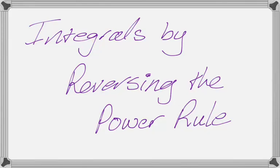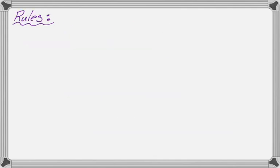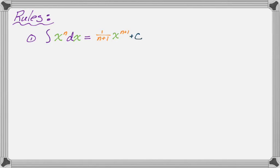In this video we are going to talk about finding integrals or antiderivatives by reversing the power rule, which is maybe the most common thing that you actually do. The first rule is that the integral of x to the n dx equals — the way I think of it is 'plus 1 times the reciprocal,' referring to the exponent. So we add 1 to the exponent to get n plus 1, multiply by the reciprocal, giving 1 over (n+1) times x to the (n+1), plus C — you never want to forget that.